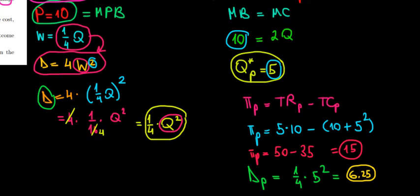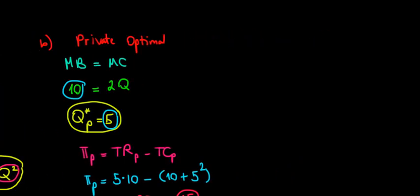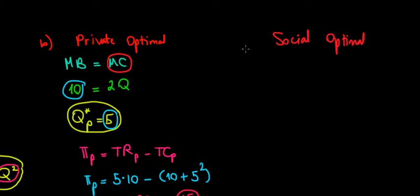Now we'll do the same method for the social optimal. For the social optimal, we also have to account for the external cost — meaning we add the marginal damage as well. So the condition becomes: marginal benefit equals marginal cost plus marginal damage.